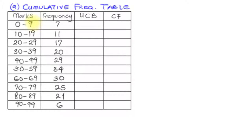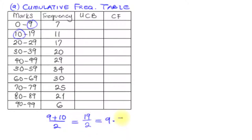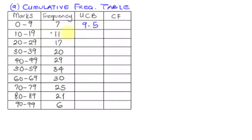To get the upper class boundary, we look at the higher mark in the first set and the lower mark in the second set, and find the average of the two. Here we have 9 and 10, so the upper class boundary for the first case will be 9 plus 10 divided by 2. That is 19 over 2, which is 9.5. The same incremental value applies to the higher marks for each mark set.